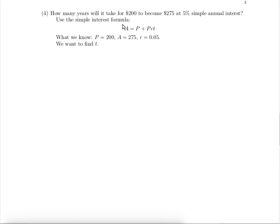As we reread the problem we notice that the present value is $200. How long will it take $200 to become $275 at 5%? So P is $200, A is $275, and the rate is 0.05 as a decimal. We want to find T.